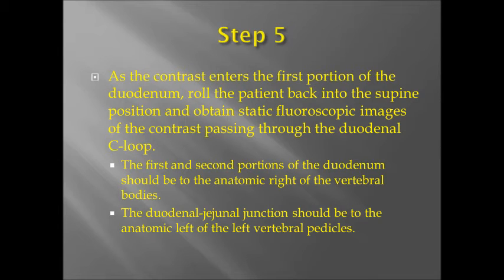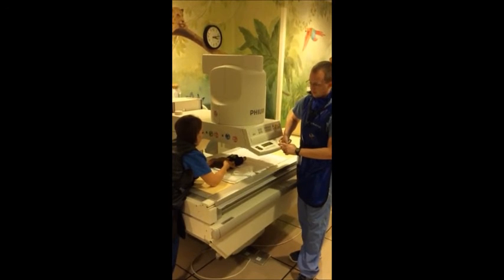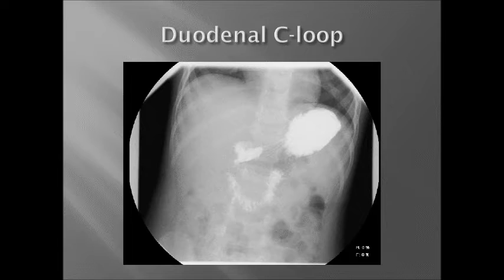Step 5: As the contrast enters the first portion of the duodenum, roll the patient into the AP supine position and obtain static fluoroscopic images of the contrast passing through the duodenal C loop. The first and second portions of the duodenum should be to the right of the vertebral bodies, and the duodenal-jejunal junction should be to the left of the left vertebral pedicles. Here is a static fluoroscopic image demonstrating the normal appearance of the duodenal C loop in the AP supine position.